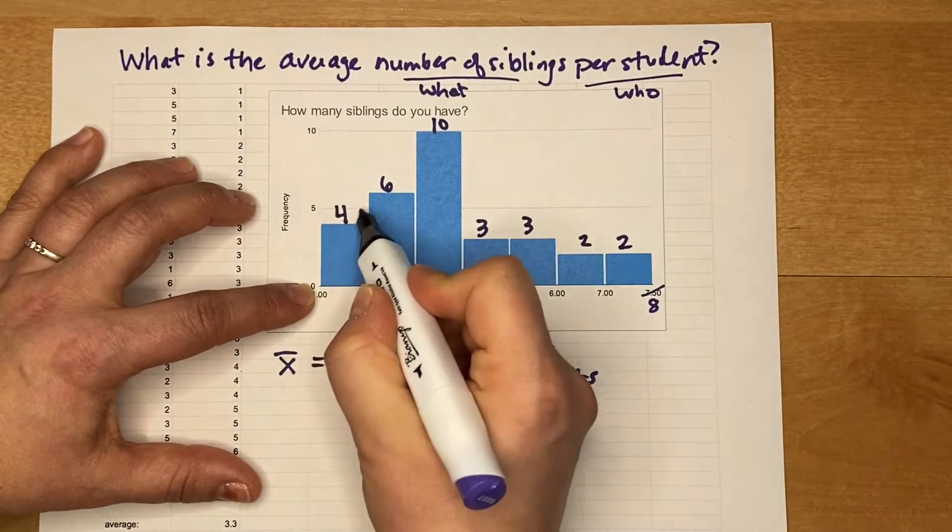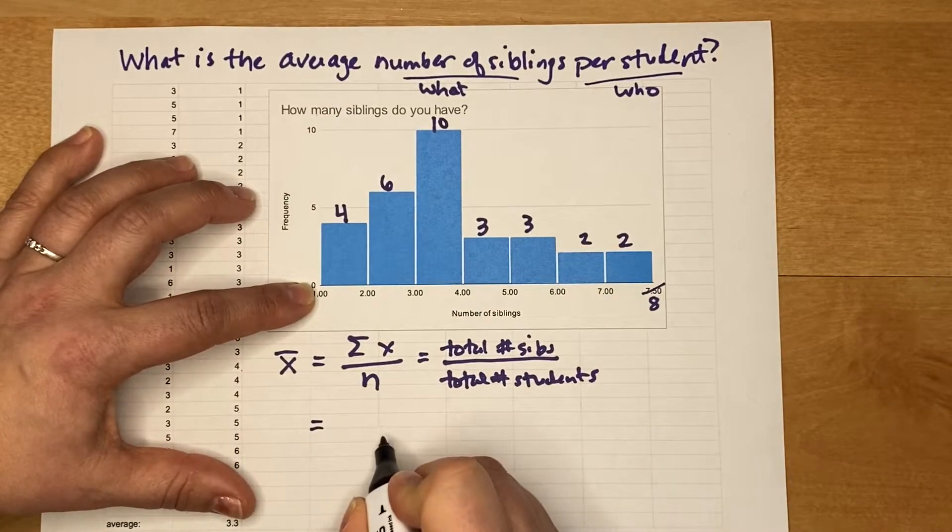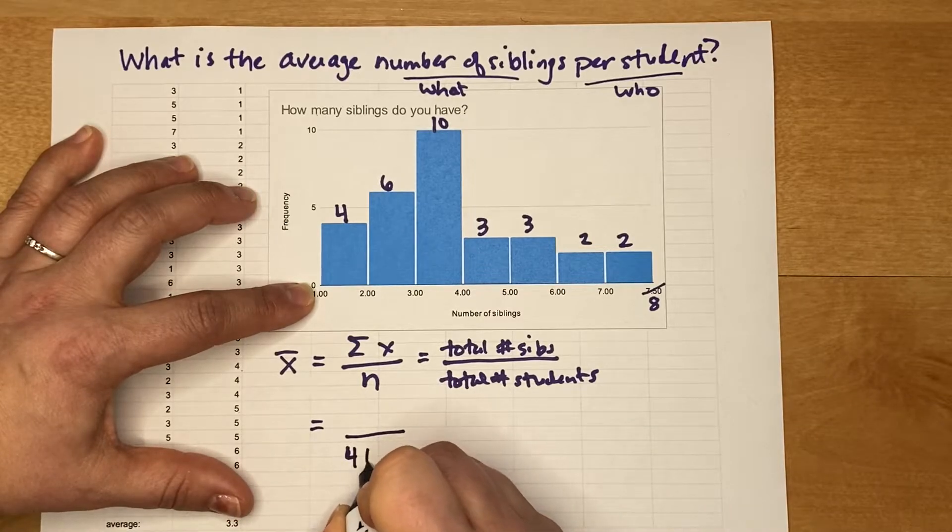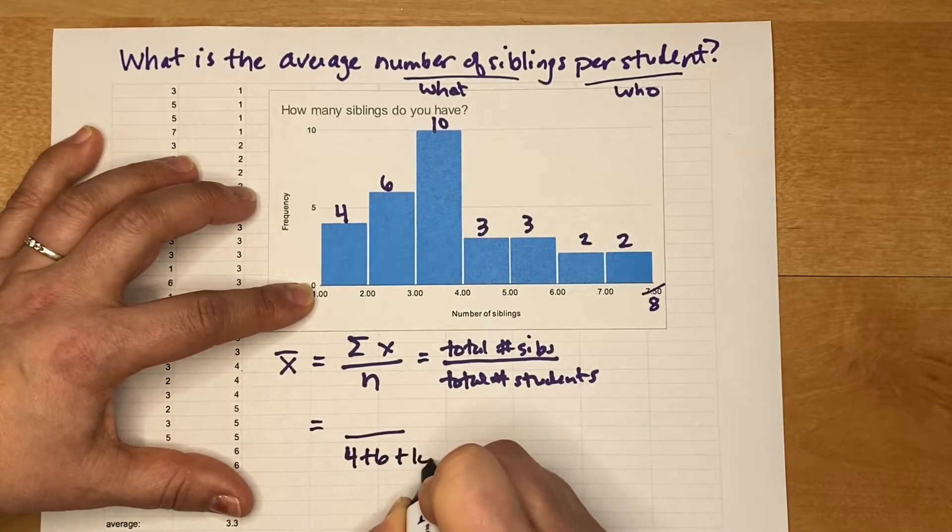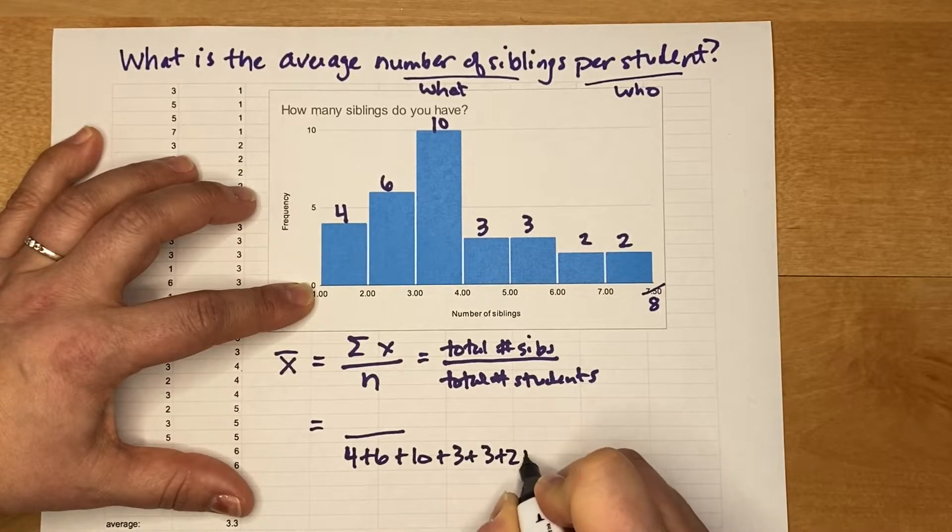And then if we go through each of these bars: 10, it's about 3, 3, 2, and 2. We realize we have far more than seven students if we add it all up. So I'm gonna start filling out my formula a little bit more. The total number of students is 4 + 6 + 10 + 3 + 3 + 2 + 2.